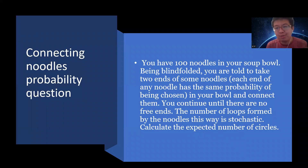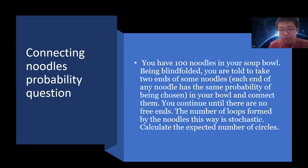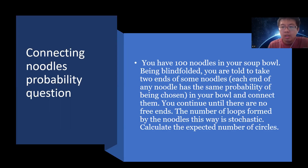Let's solve this interesting probability question. I think this problem is strange but still worth making a video on. If you are interested in more strange probability questions, you can click the video list below and subscribe to my channel. The stupid game is: you have 100 noodles in your soup bowl, a blindfolded guy takes two ends of a noodle and connects them to form a circle, and you continue until there are no free ends. Calculate the expected number of circles formed.